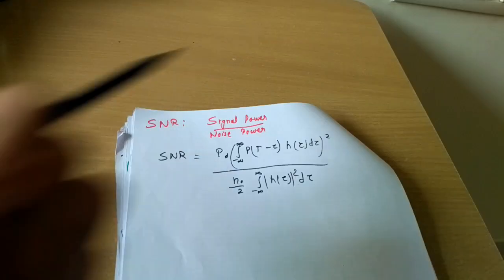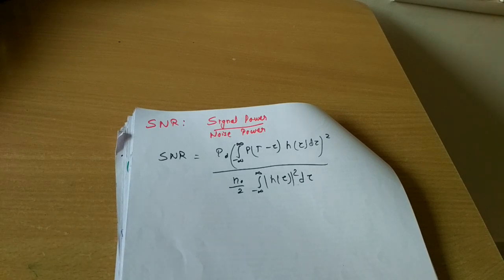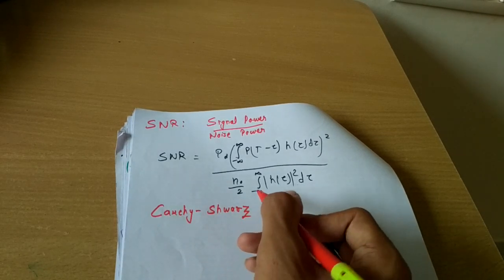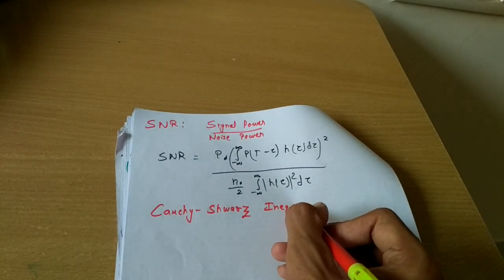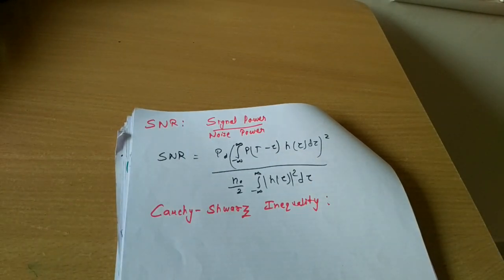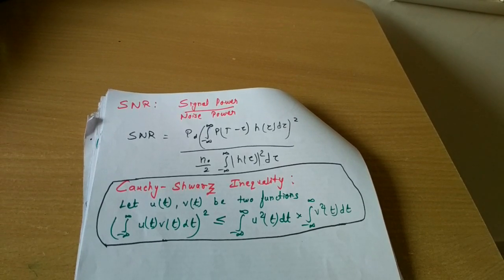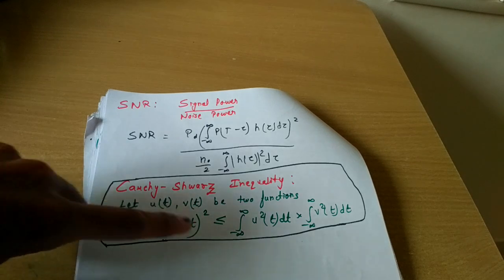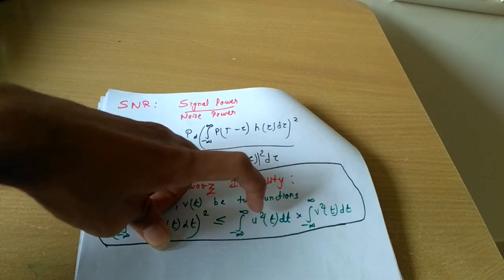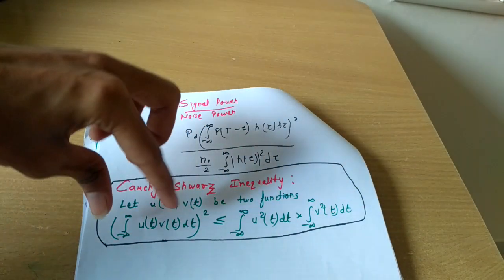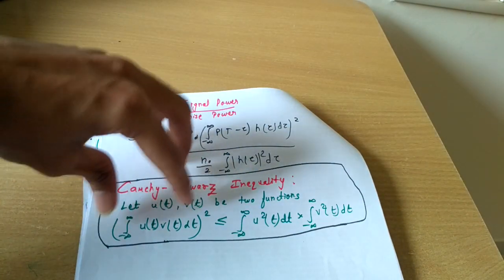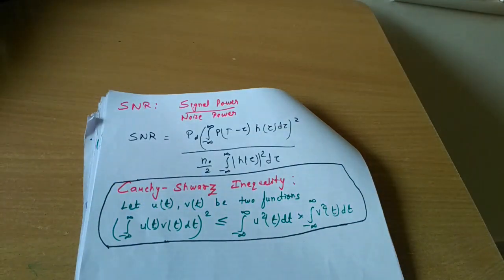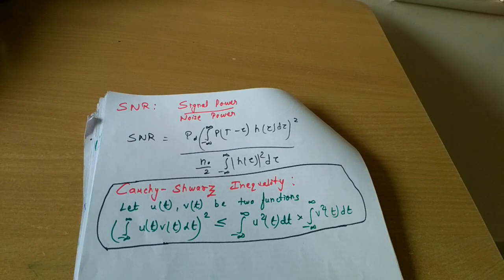To maximize the SNR expression, we will apply the Cauchy-Schwarz inequality. This inequality states that for two functions u(t) and v(t), the square of the integral of their product is always less than or equal to the product of their individual squared integrals: [∫u(t)v(t)dt]² ≤ ∫u²(t)dt · ∫v²(t)dt.